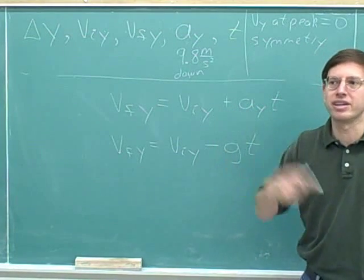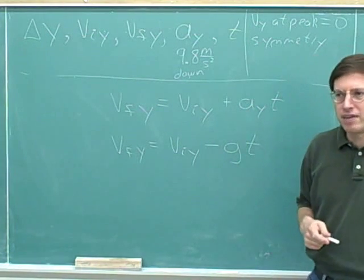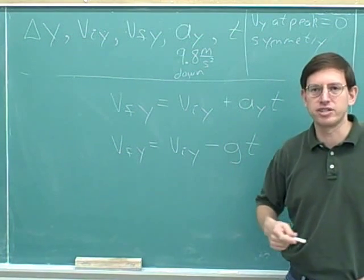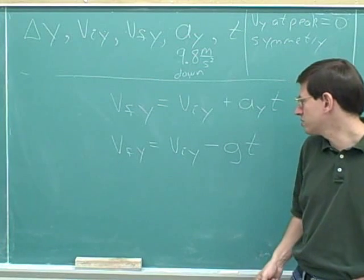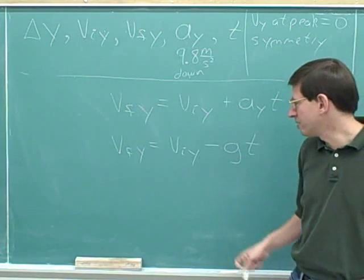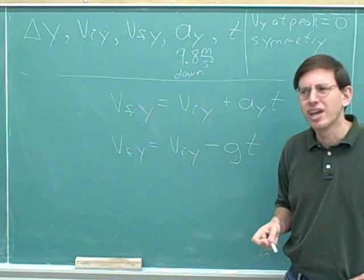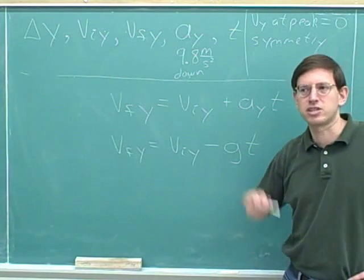Well, maybe sometimes you want to choose down as your positive direction. If you're actually moving down, it might make more sense to choose the direction of motion, which is down, as your positive direction. So the other reason I'm not too wild about this way of solving problems is that it assumes that you're always choosing up as the positive direction. I don't think that's necessarily the best way to approach things.